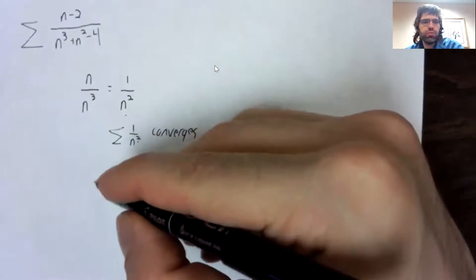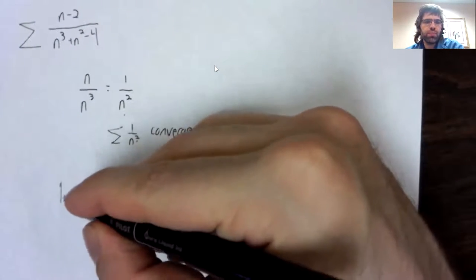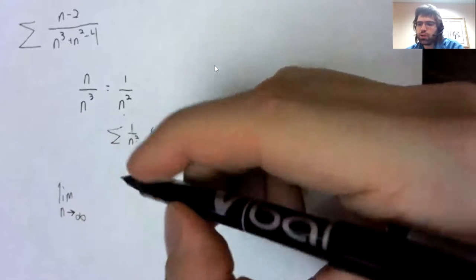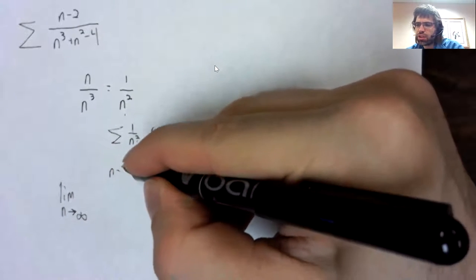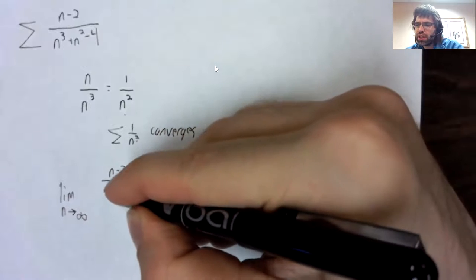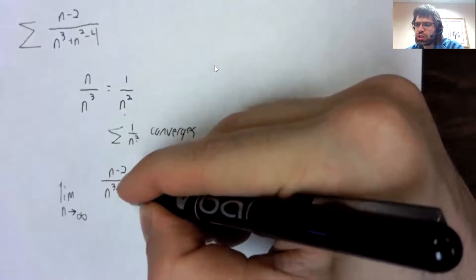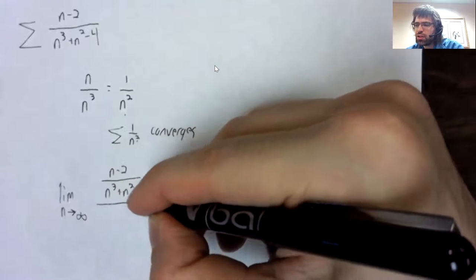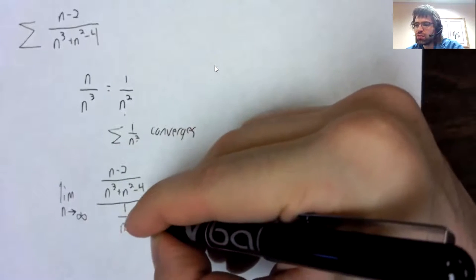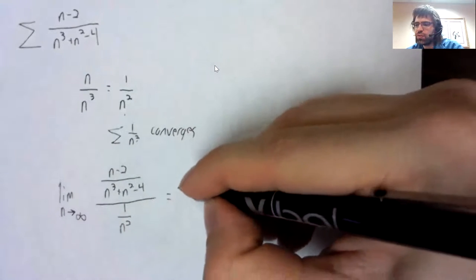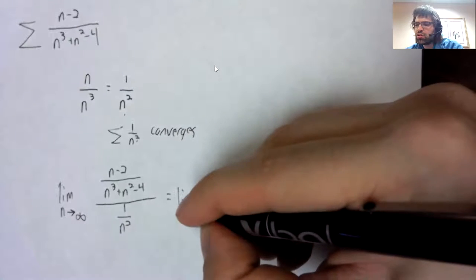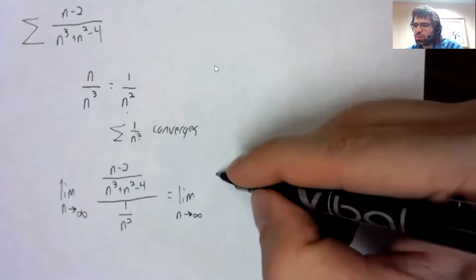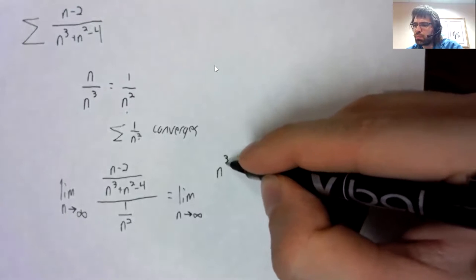But to use the limit comparison test, which is what we're talking about here, we have to actually take the limit of these ratios and demonstrate that we get a finite positive number.